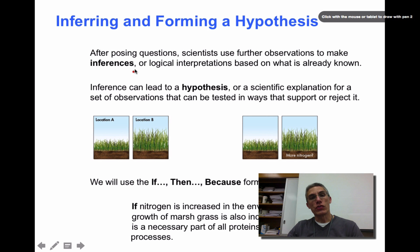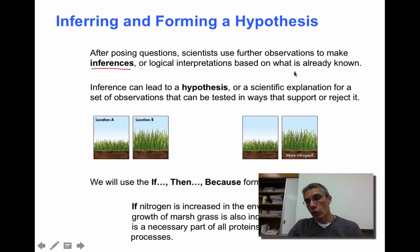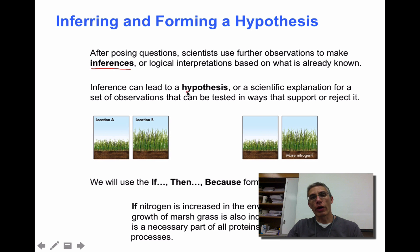After we've made some really good, high-quality observations, we need to use those observations to make one of two things. We might decide to make some inferences or interpretations based on what we already know about the situation — why there is a difference between the short grass in location A and the taller grass in location B. These inferences can lead to a more well-thought-out scientific explanation for those observations, and in this case we're going to call that a hypothesis.